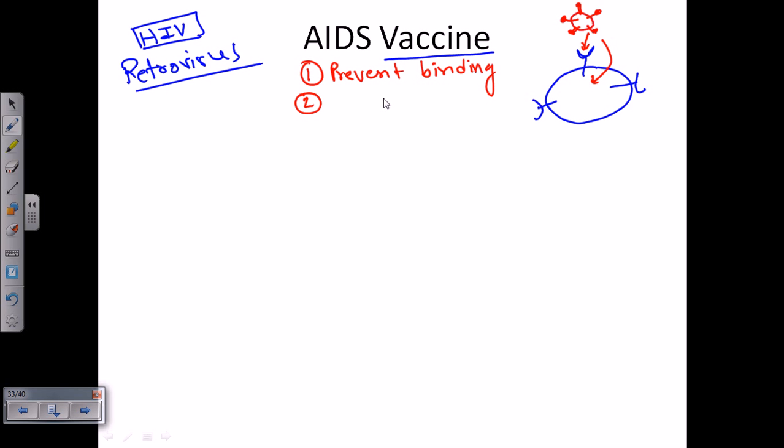The second thing is we can kill the infected cells. We can kill our own infected cells because the infected cells are also the source for other infection spreading.